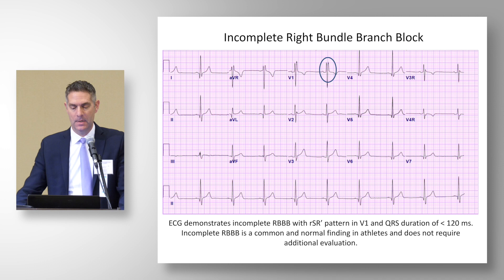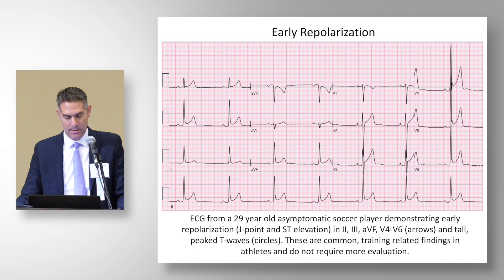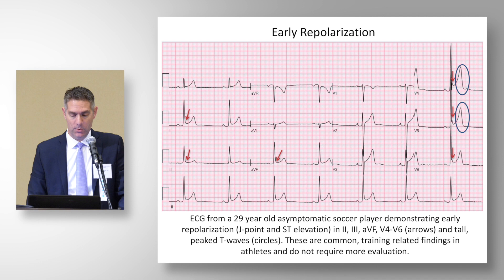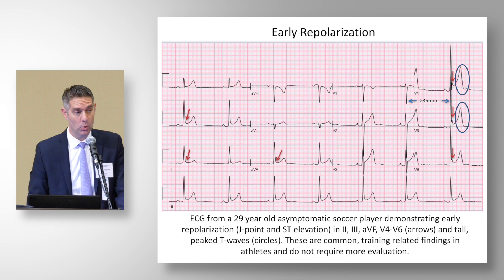Here's an example of early repolarization in a 29-year-old asymptomatic soccer player. You can see the J point and ST elevation predominantly in the lateral and inferior leads, peaked T waves, and also striking voltage representing LVH. This is a normal appearing ECG in a young athlete.